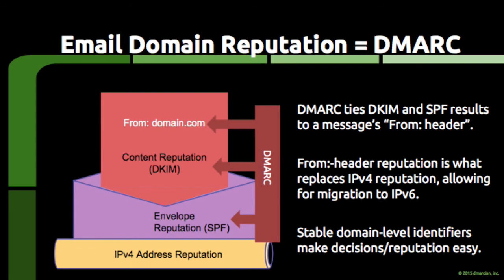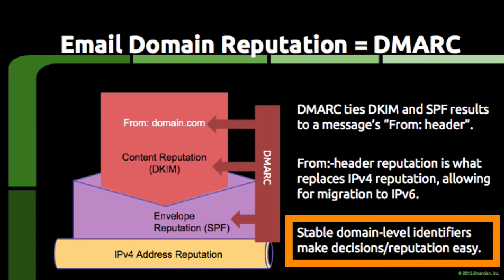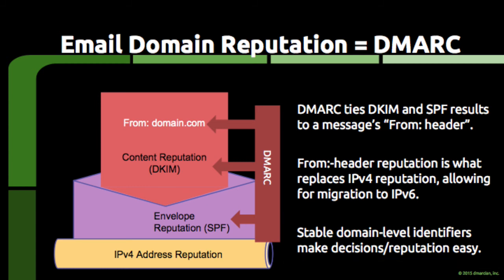Closely related to this is the third use case that DMARC is enabling — that of domain reputation. Domain reputation is what happens when email receivers build delivery and filtering decisions based upon the domain that is linked to a piece of email, as opposed to the IP address of the server that's trying to deliver email, or whether or not the content of email appears to be safe. In other words, DMARC brings stable, domain-level identifiers to email and is allowing email receivers to replace a lot of complexity with a much simpler model — deliver DMARC-compliant email that people want.